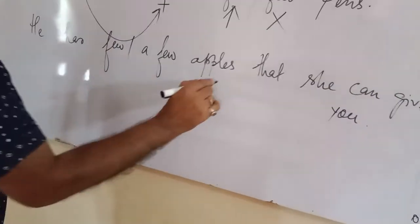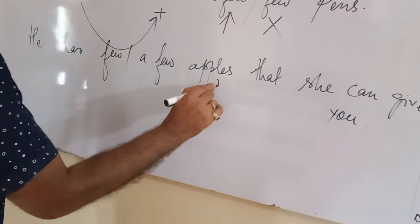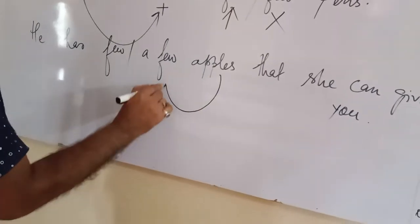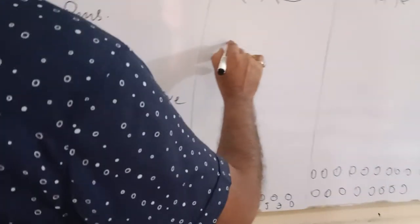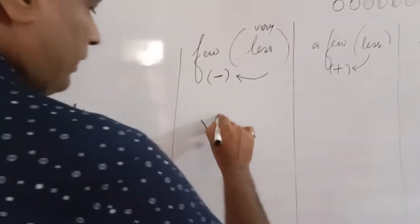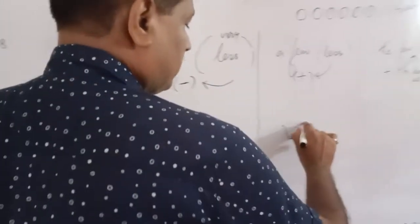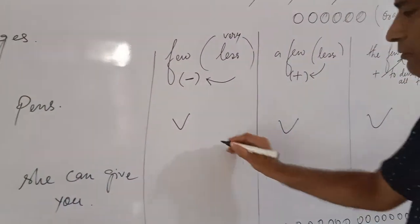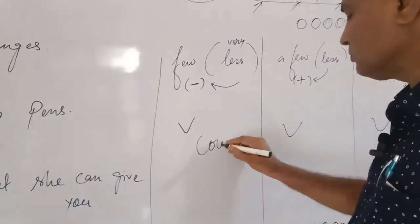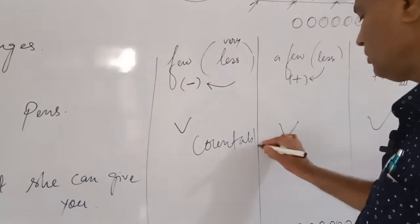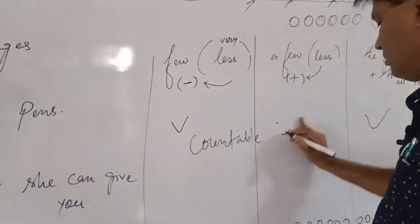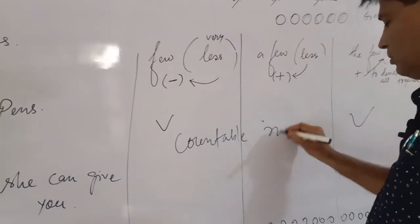'Few,' 'a few,' and 'the few' are all used before countable nouns in their plural form. For example, 'apples' is a countable noun, so these adjectives apply to it.